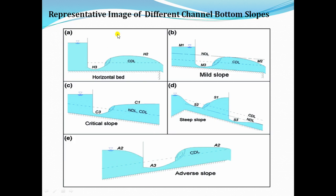In a diagram showing adverse slope, in all previous cases the channel bottom drops in the direction of flow. But in an adverse slope channel, the channel bottom rises in the direction of flow — hence the term adverse. A representative image shows the five different channel bottom slopes: horizontal slope, mild slope, critical slope, steep slope, and adverse slope.